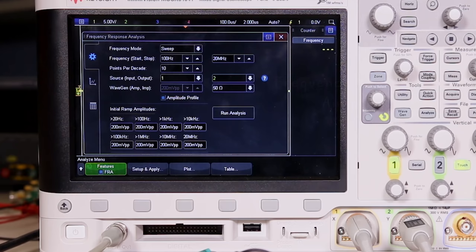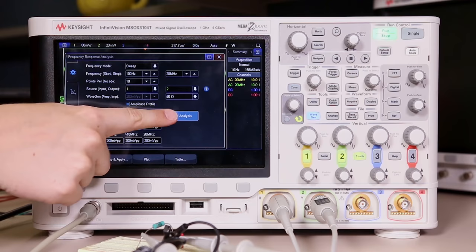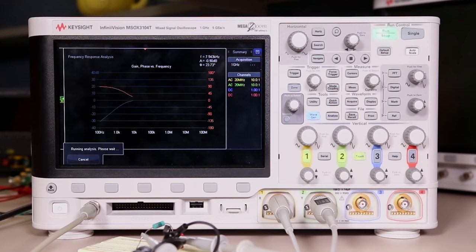So once you have all of these settings configured properly for your specific test you can press run analysis. Now you can see the sine waves actually changing in frequency on the screen and then you can see each of the data points starting to be plotted on the Bode plot as it runs.